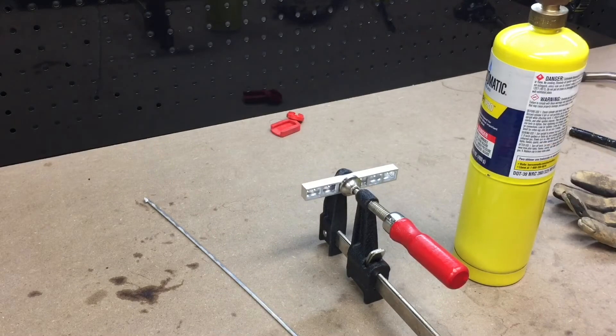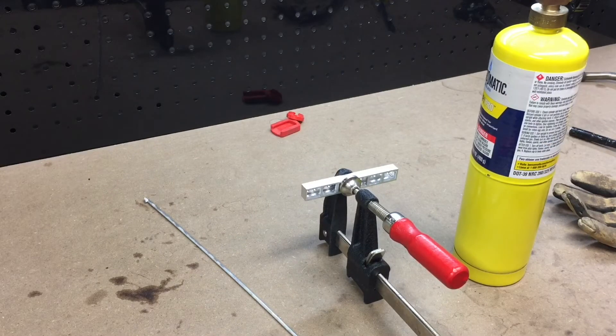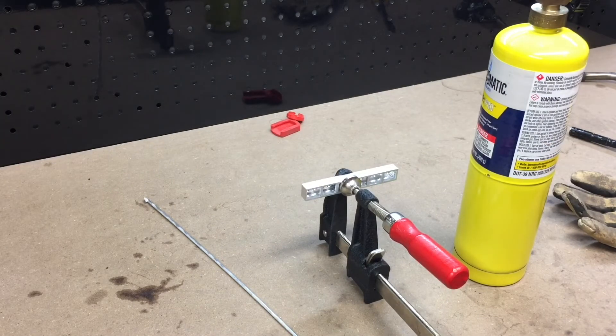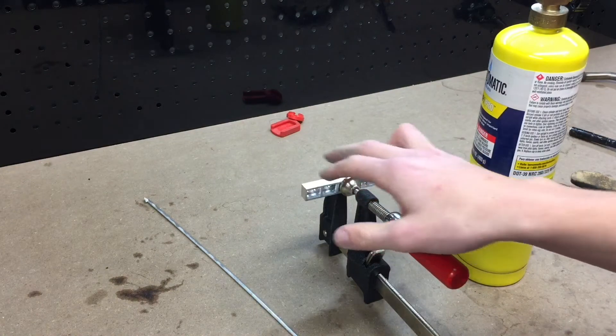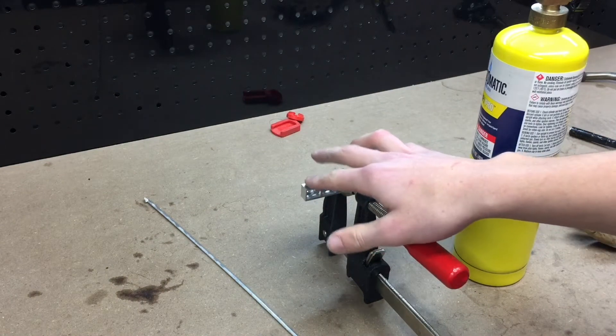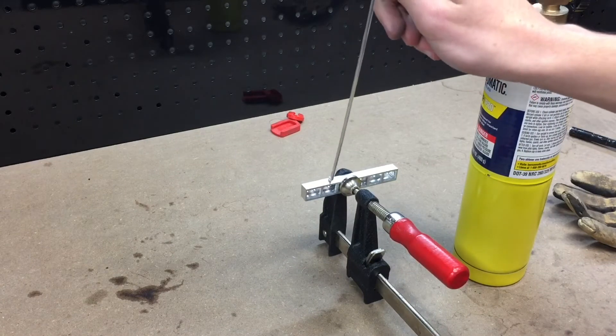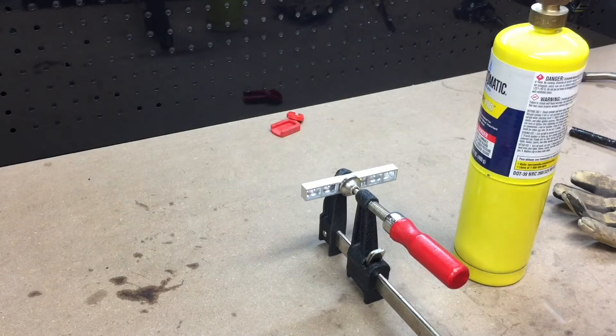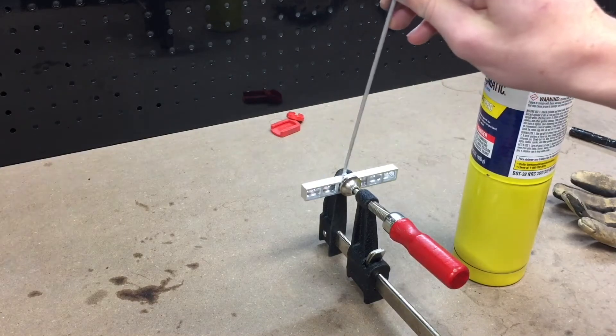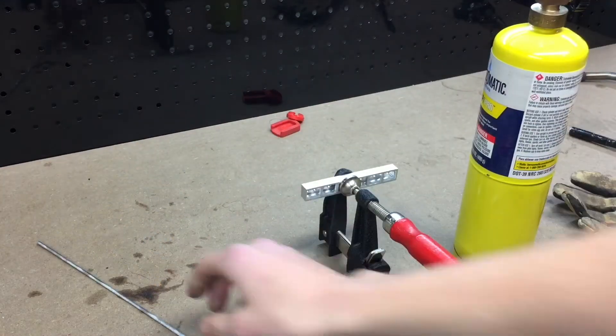Hopefully this will go pretty well. The main thing you need to understand about this is that you need the aluminum to be hot enough to pretty much melt the rod itself. Once you remove the flame from the map gas, you should be able to melt the rod with the heat of the aluminum.